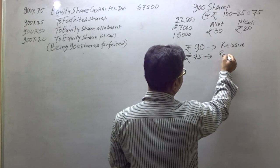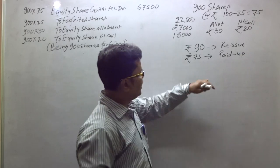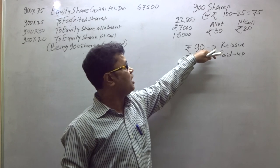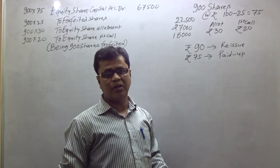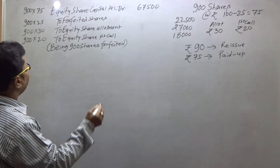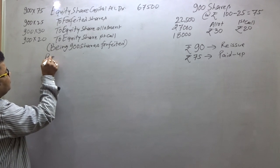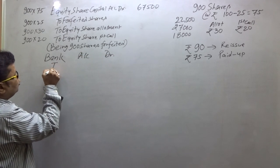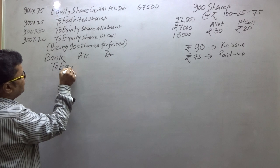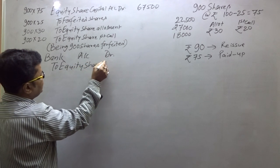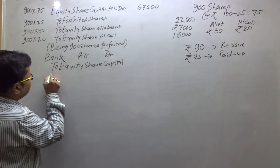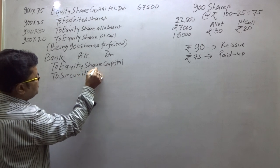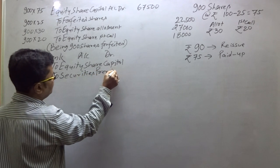The company reissued the shares. Since the reissue is at a premium, the entry is: Bank Account debit, to Equity Share Capital Account, and to Securities Premium Reserve Account.